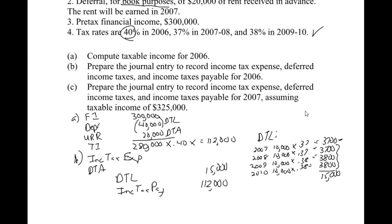The rent difference was 20,000 and the rent will all be earned in 2007, so it's all reversing out next year. We take all 20,000 times 37% — the 2007 rate — which gives us 7,400 for the deferred tax asset. Then income tax expense as the plug number is 119,600.